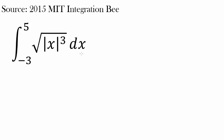We need to evaluate the integral from negative 3 to 5 of the square root of the absolute value of x cubed dx. Absolute value of x is usually harder to deal with compared to plain x or negative x, so let's try to turn absolute value of x into x or negative x.